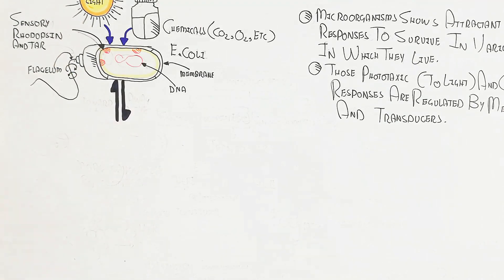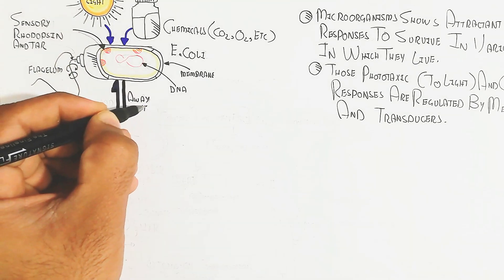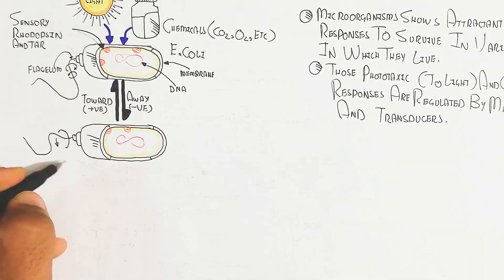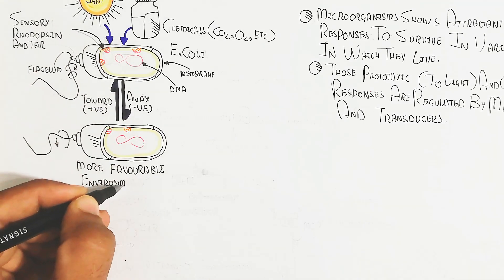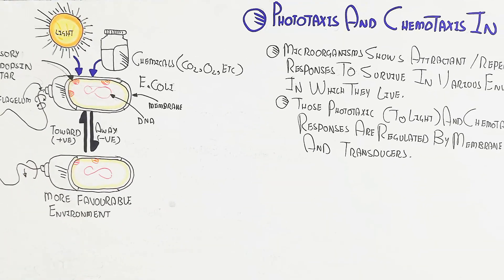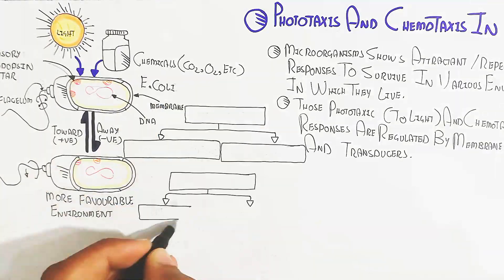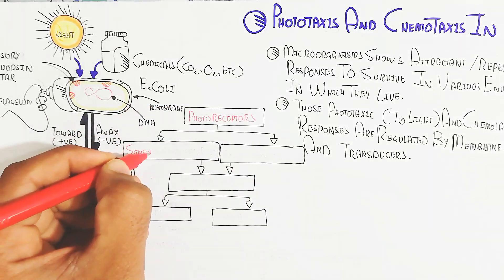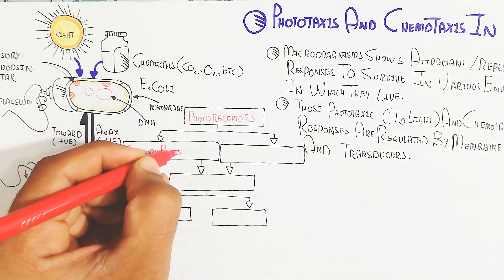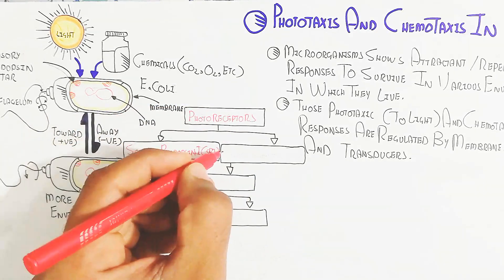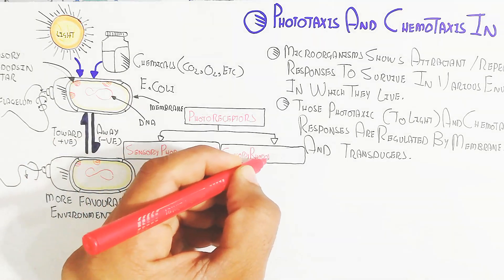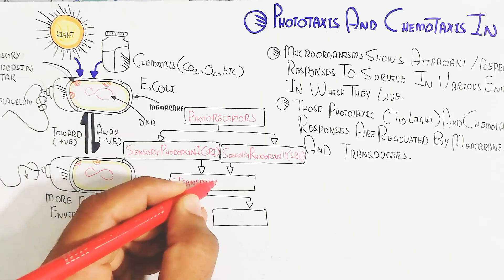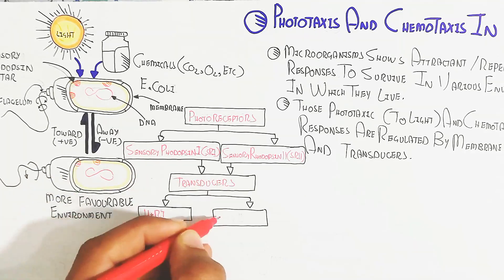Whenever the bacterium feels a stimulus, it will move away from or toward the stimulus. Moving away means negative phototactic movement; moving toward means positive phototactic movement. To find the most favorable environment, photoreceptors can be divided into two domains: sensory rhodopsin one and two, which trigger the transducers.